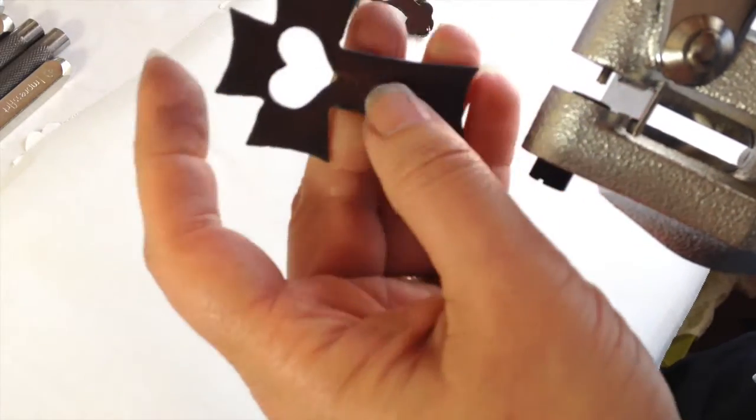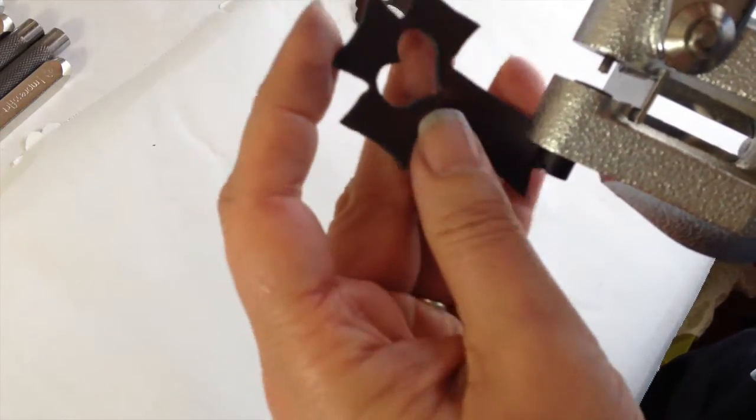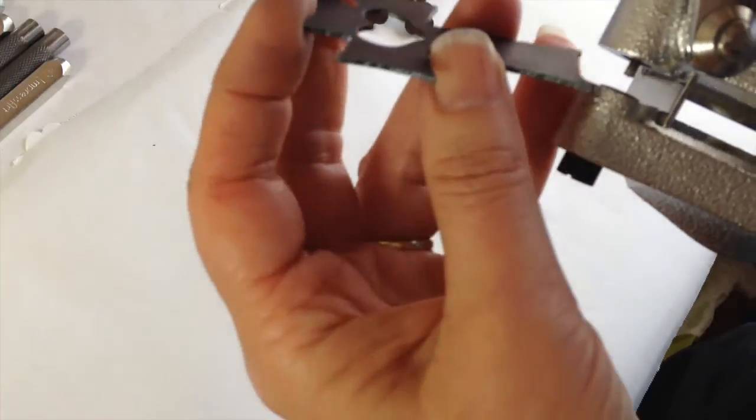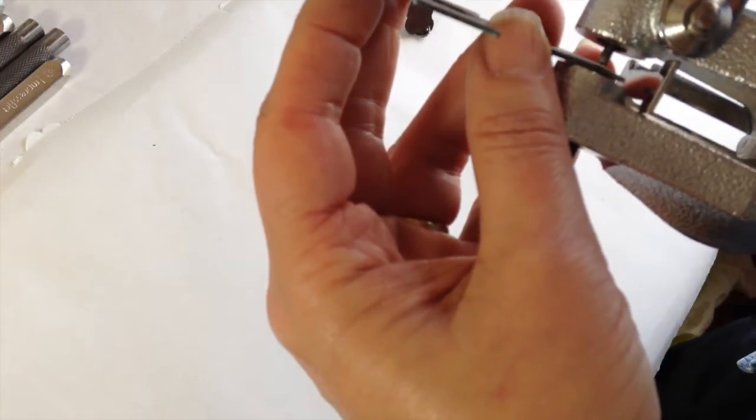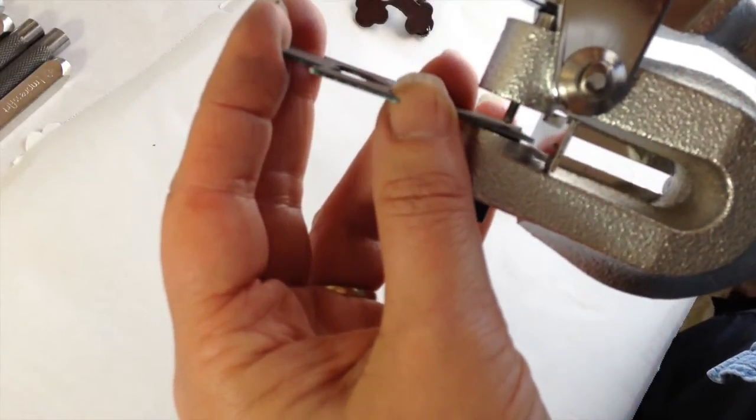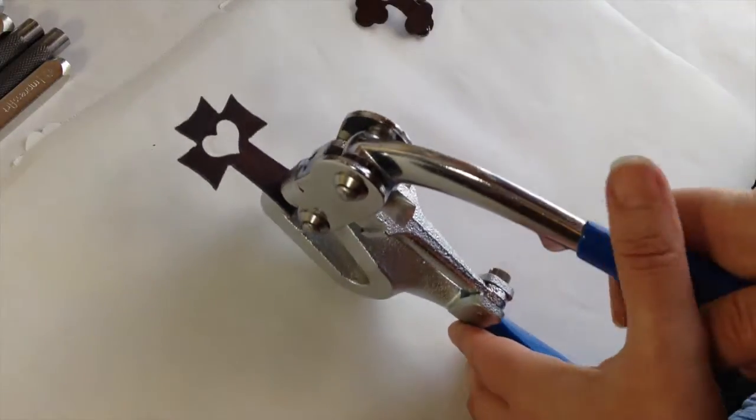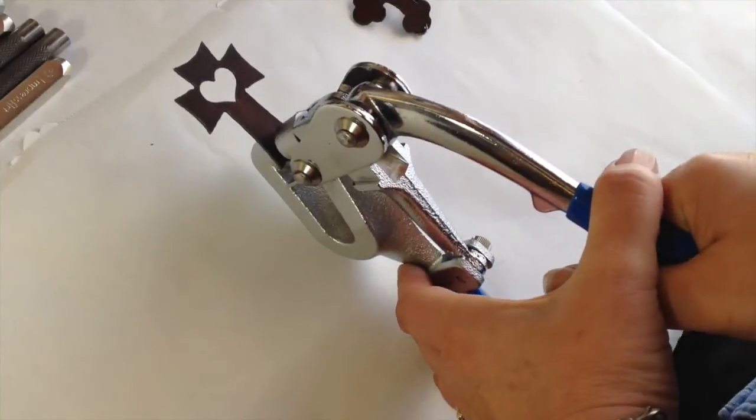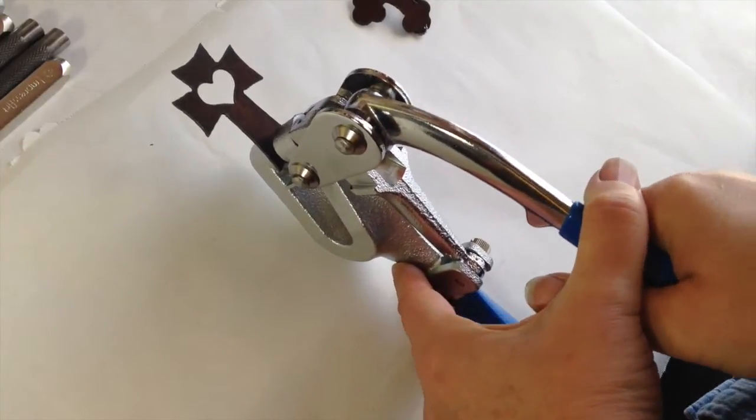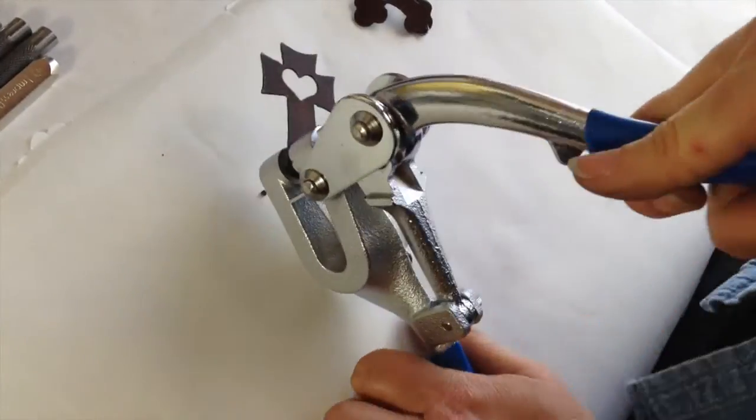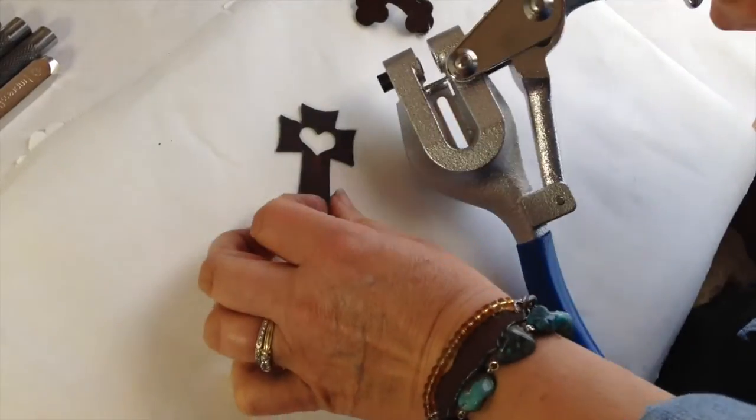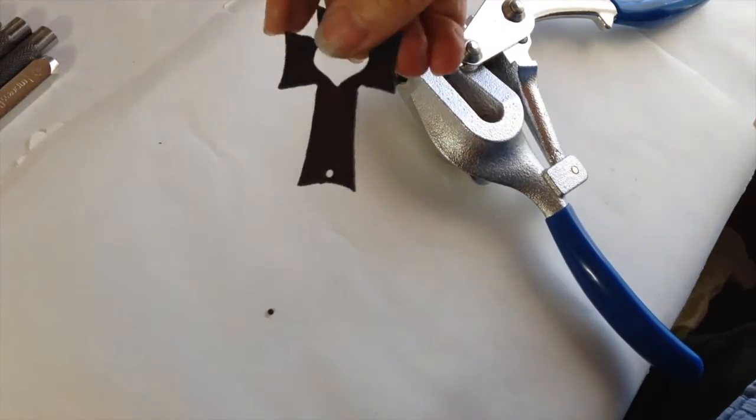Sometimes I'll use a Sharpie and just make a little dot where I want it. So it's right in there. I usually push it down and hold it and then put it up against something hard because this one takes a little muscle. And it is noisy. So see, it punched a hole right in there.